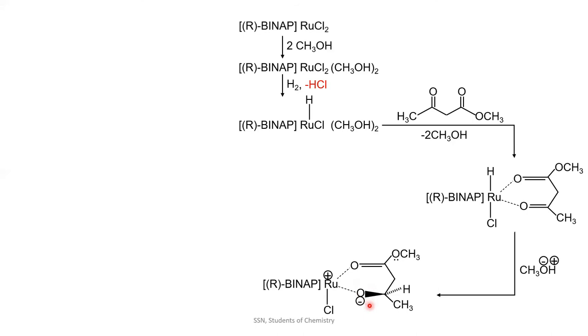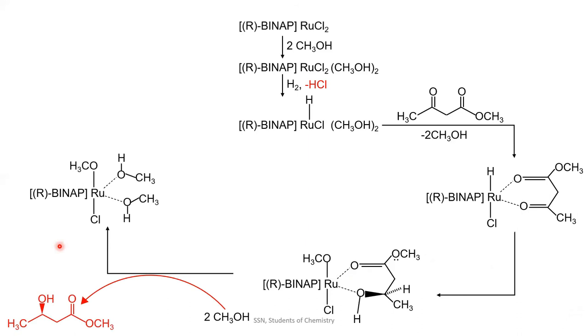Now, this electronegative oxygen takes the proton from the methanol and the methoxide ion neutralizes the deficiency present in our active site. Further addition of methanol will give us our enantioselective product.